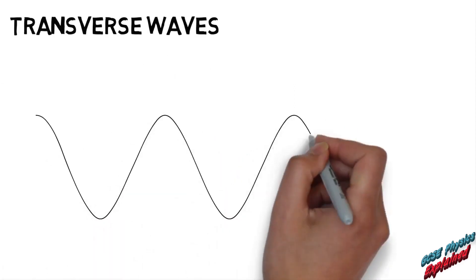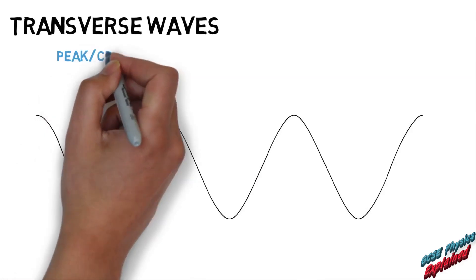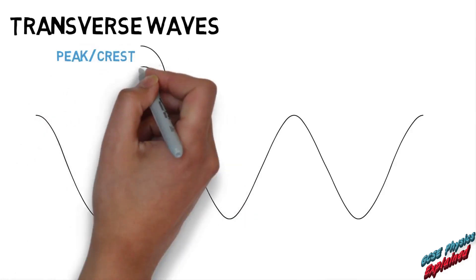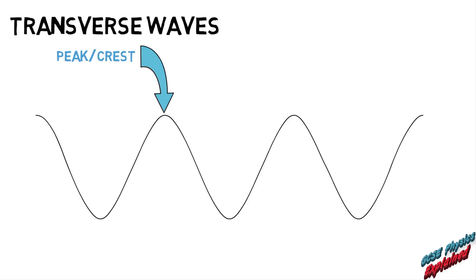But let's first draw a transverse wave, showing what we call the peaks or crests, which are the highest points of the wave, and the troughs, which are the lowest points of the wave, as these will help us when describing the wave.